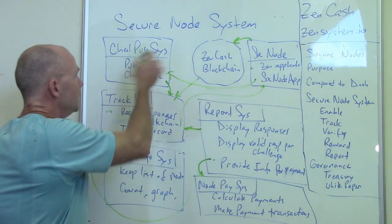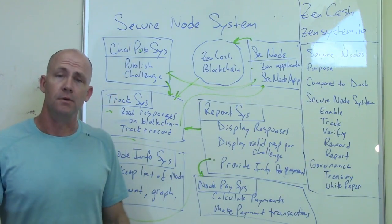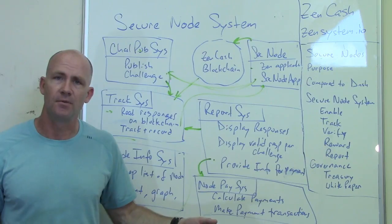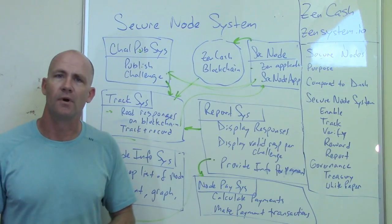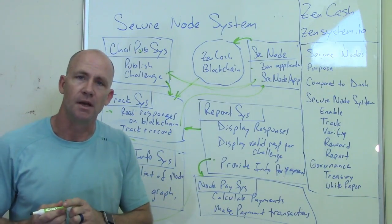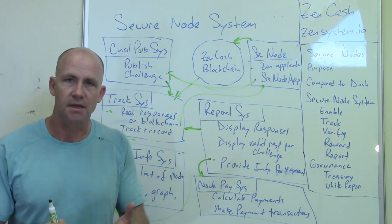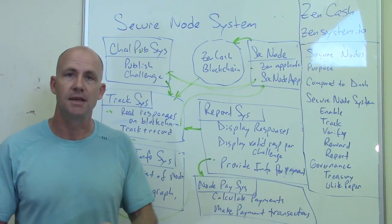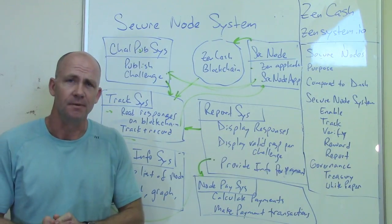The big picture: this is the secure node system that we're putting together. Right now, we're talking to developers and software development project managers, and we really want to get this project off and running because the secure node system is something unique to ZenCash. It's important for us to have this running so we can accomplish the objectives of ZenCash — private communications, private transactions, and anonymous publishing. Please go check out the forum post, and if you come up with other ideas or a more elegant way to do this, I'd love to hear from you. Thanks.